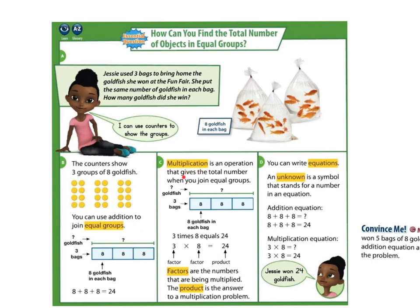Multiplication is an operation that gives you the total number when you join equal groups. So we joined our 3 bags of goldfish, which each had 8 in each bag, which actually shows us 3 times 8. We have 8 here 3 times — 8 fish in 3 bags. 3 times 8 is 24. Something important to know: the numbers you are multiplying together are called factors. The answer to that multiplication problem is called a product.